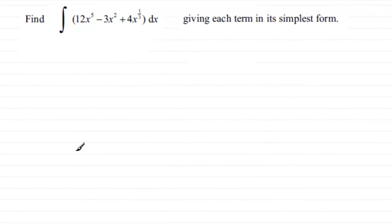Hi, this is a nice example on integration. We need to integrate 12x to the power of 5 minus 3x squared plus 4x to the power of one-third, all with respect to x, and give each term in its simplest form.